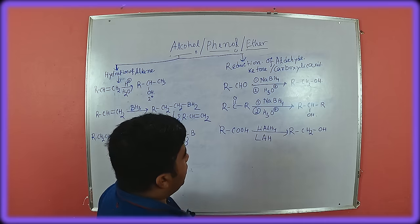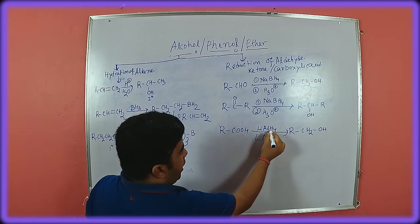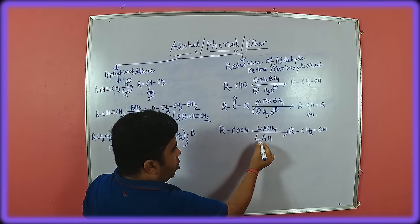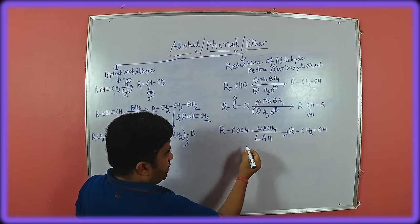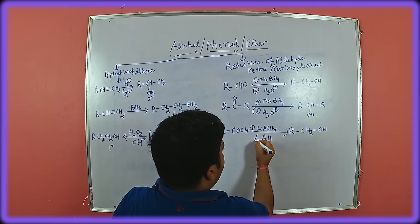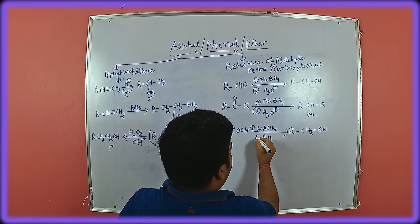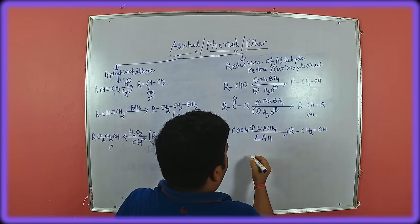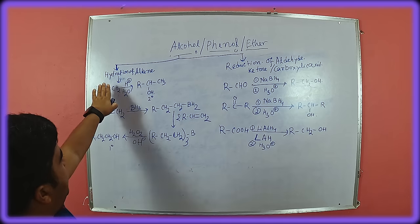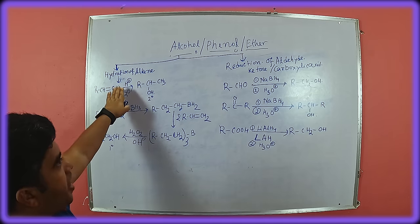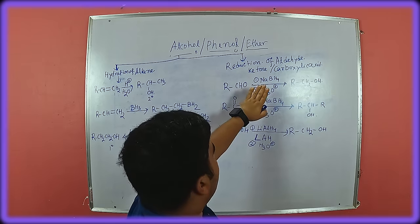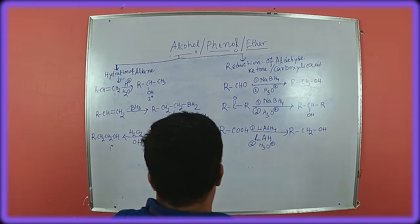Lithium aluminium hydride is written as LiAlH4 or LAH — do not be confused. So we can see: first, hydration of alkene; then reduction of aldehyde, ketone, and carboxylic acid. For carboxylic acid, lithium aluminium hydride is generally used.